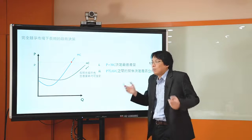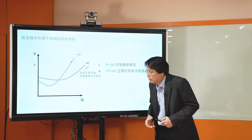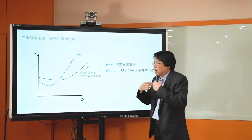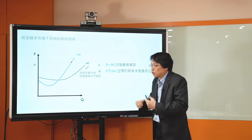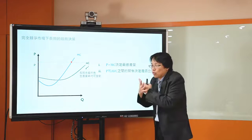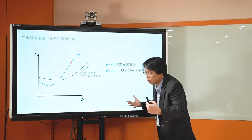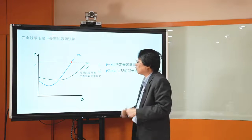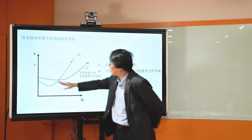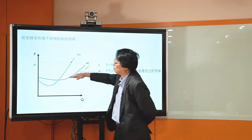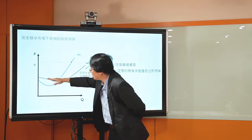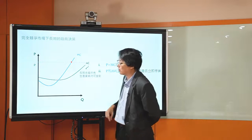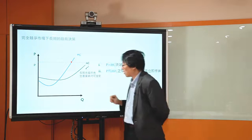长期里面没有所谓的平均变动成本跟平均固定成本的区分，因为在长期的时候所有生产要素都可以变动，所以就没有平均固定成本这件事情。平均变动成本就等于平均成本，所有成本都是平均变动成本，平均成本线同时也就是平均变动成本线。